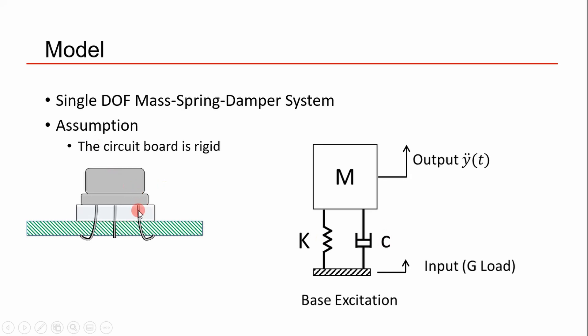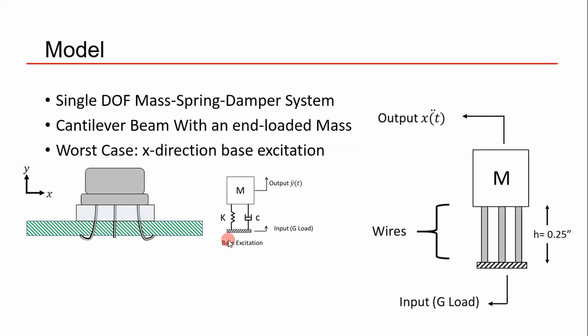To do this analysis, there's one key assumption: I'm assuming the circuit board is rigid, meaning it doesn't deflect, which allows us to use simple equations. If it weren't rigid, coupling effects might come into play — but that's for another video. We're going to take this mass-spring-damper, single degree of freedom concept and adapt it to our system.